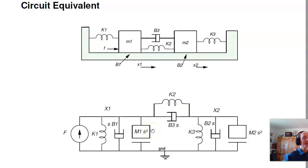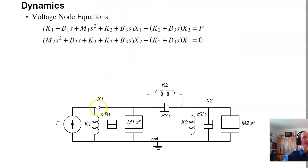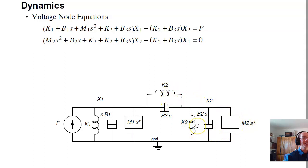So here's my circuit equivalent. Now write your voltage node equations — just remember these are admittances, so current is admittance times voltage, not divide. When you write the node equations at node 1, I'll have all the admittances attached to it: k1 plus b1s plus m1s² plus b3s plus k2, attached to node 1. Between node 1 and 2, I get minus k2 minus b3s. Likewise at node 2, all admittances attached: k3 plus b3s plus k2 plus b2s plus m2s², minus the admittances between nodes equals zero. These are my coupled differential equations.